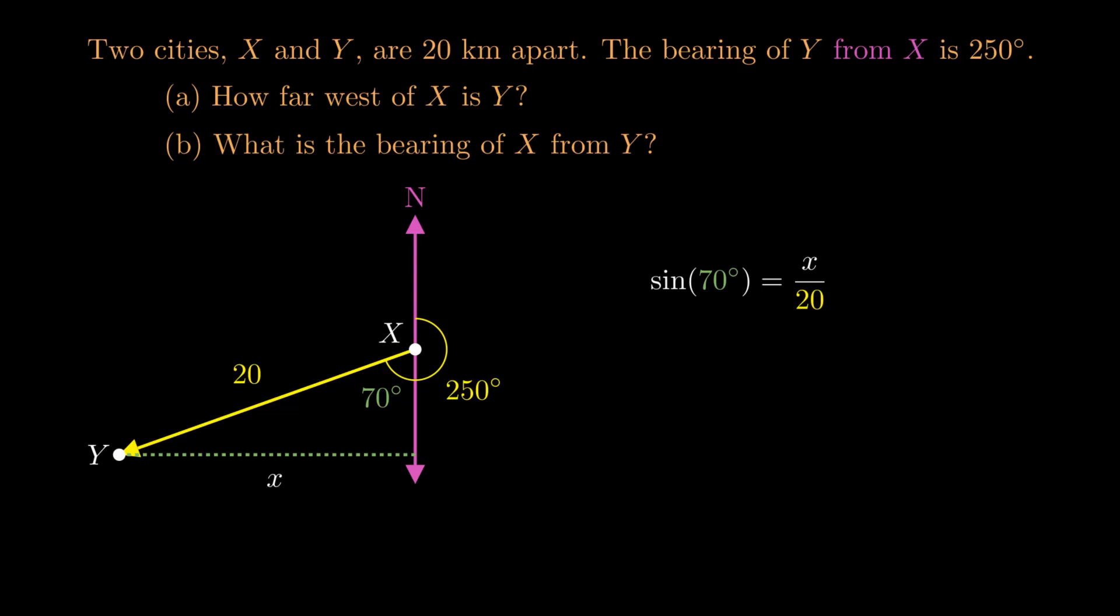Here we multiply both sides by 20 to get rid of the over 20 on the right, meaning x is just 20 times sine 70, which turns out to be about 18.79 kilometers. And so that's part A. That's how far west Y is from X, just how far to the left on this drawing.